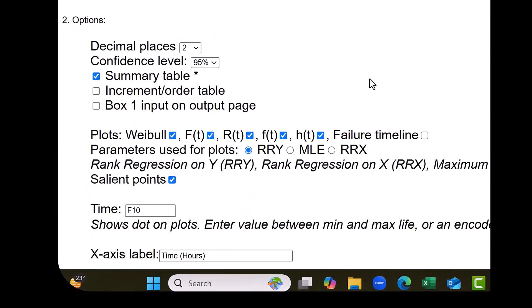Now, you have to make some choices in the options. The summary table. Also click on the increment order table so that you will know the median ranks, etc.